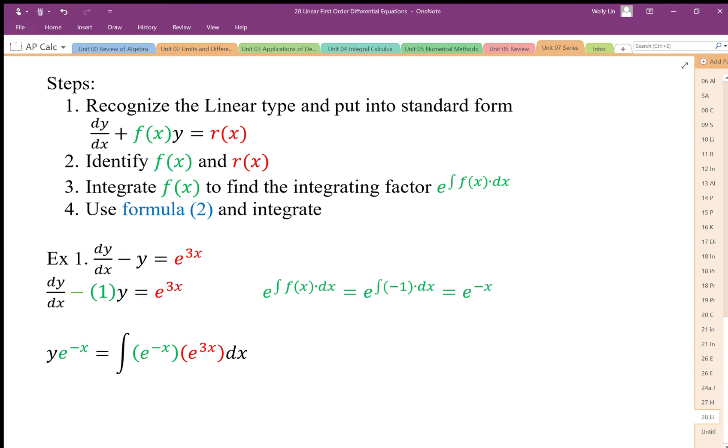So here we have our linear first order differential, so we have this derivative part, we have something times y, and so our f of x is negative 1 and our r of x is e to the 3x. So using that negative 1, we generate our integrating factor, and our integrating factor is e to the negative x. And then we just plug it into our integral here.